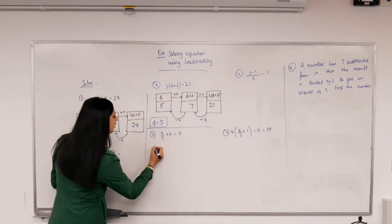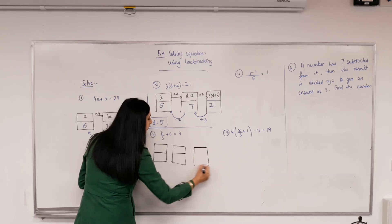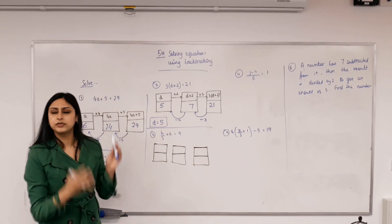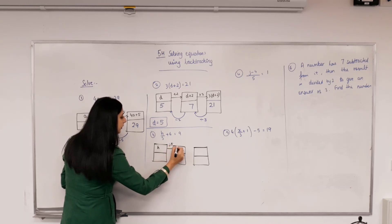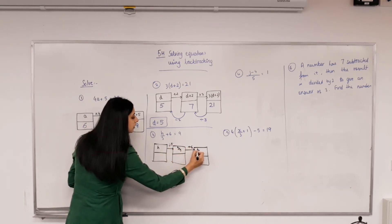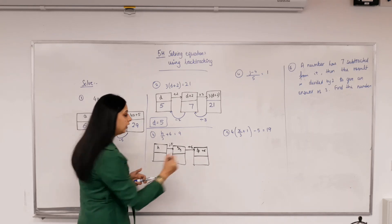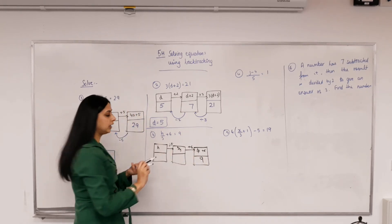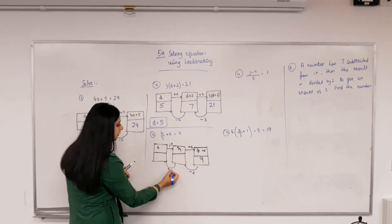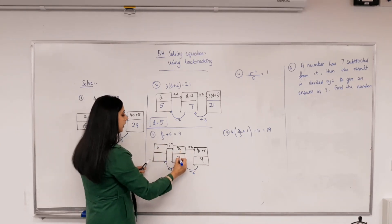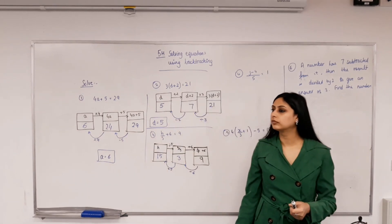Next one. Building the expression again. What's the pronumeral we start with? H. What's the first thing we're doing to it? Dividing by 5 — exactly. We're not adding 6 yet because 6 has nothing to do with 5. So H must be divided by 5, and then 6 will be added. So we have H divided by 5, then plus 6. What is that equal to — the right-hand side? 9. Backtracking: inverse of adding 6 is subtract 6. Inverse of dividing by 5 is multiply by 5. So 9 take away 6 is 3, and 3 times 5 is 15. H equals 15.